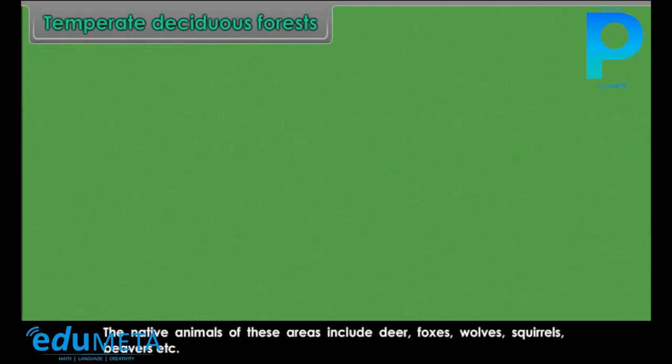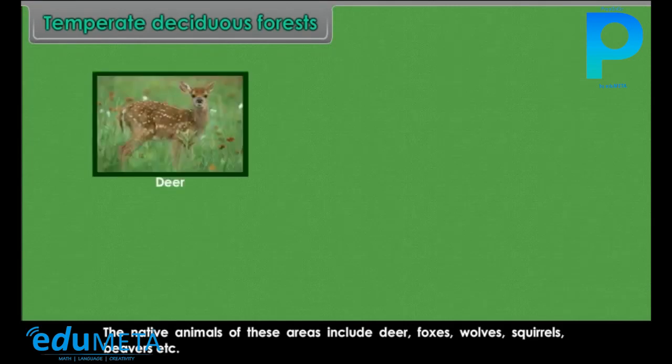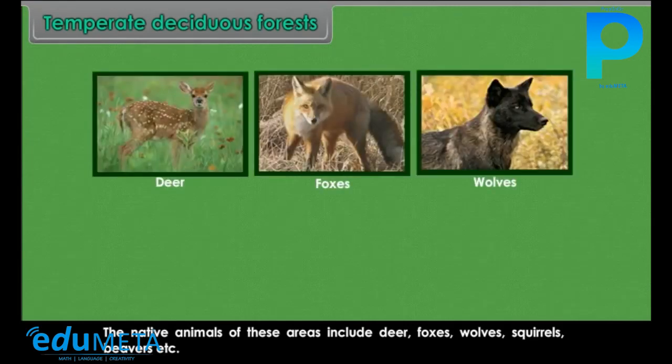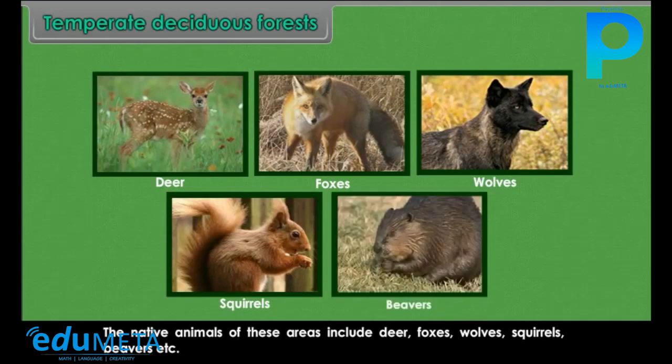The native animals of temperate deciduous forest areas include deer, foxes, wolves, squirrels and beavers.